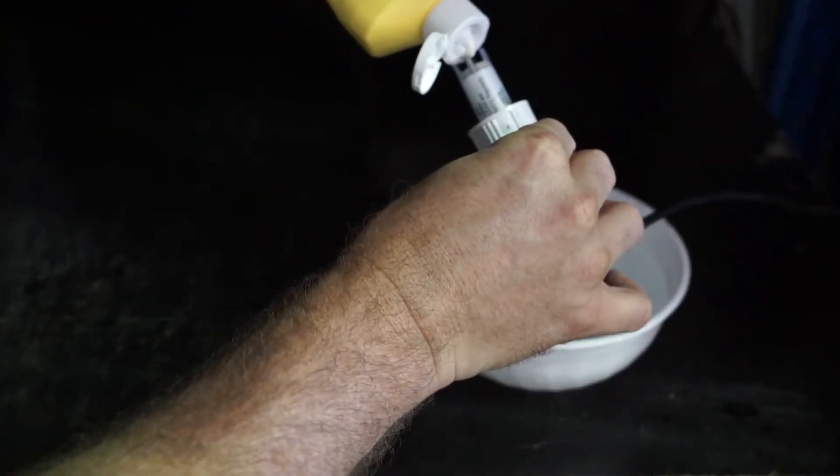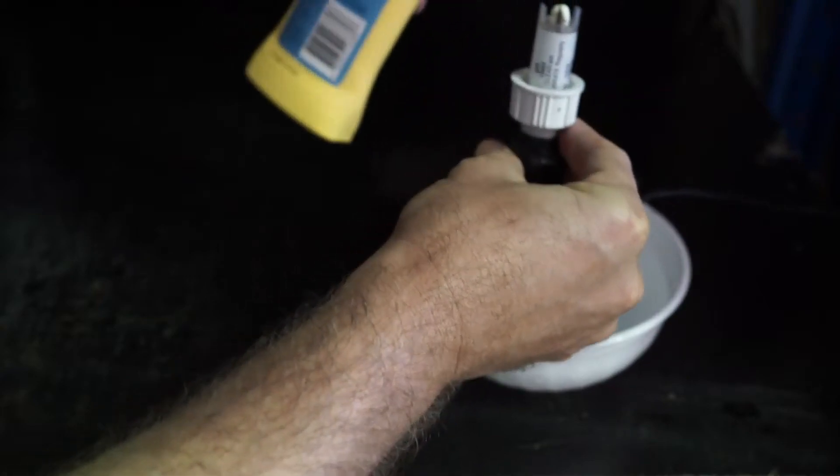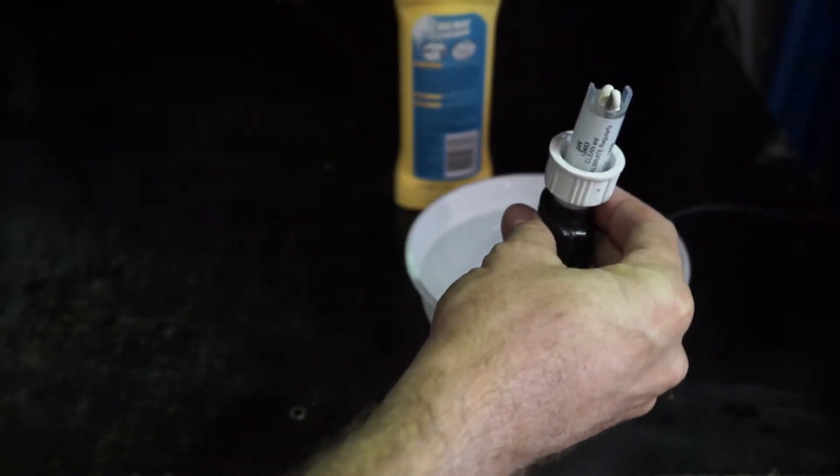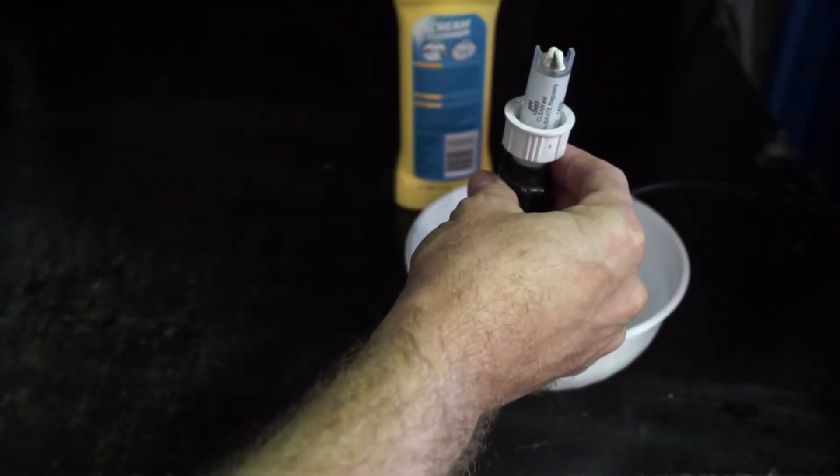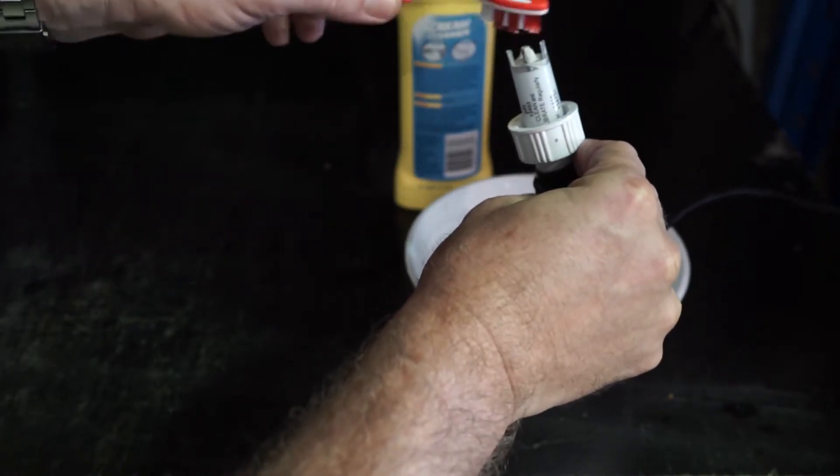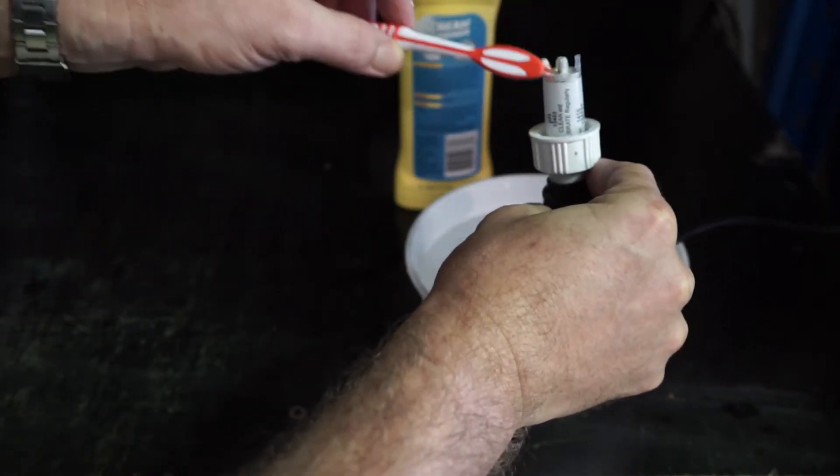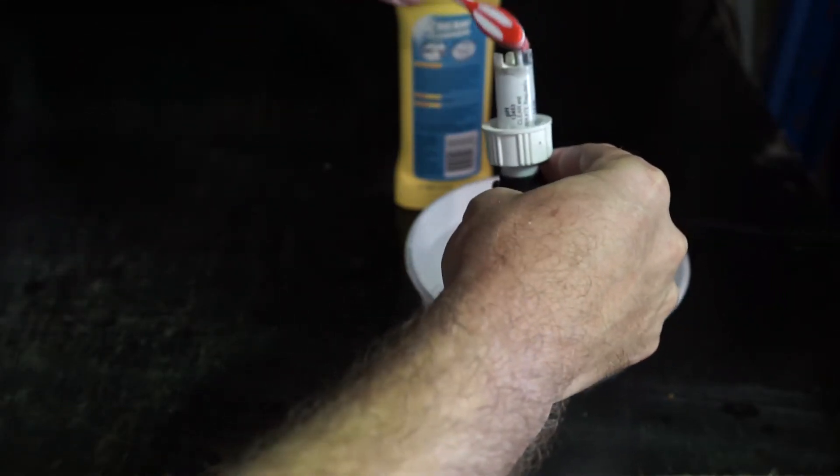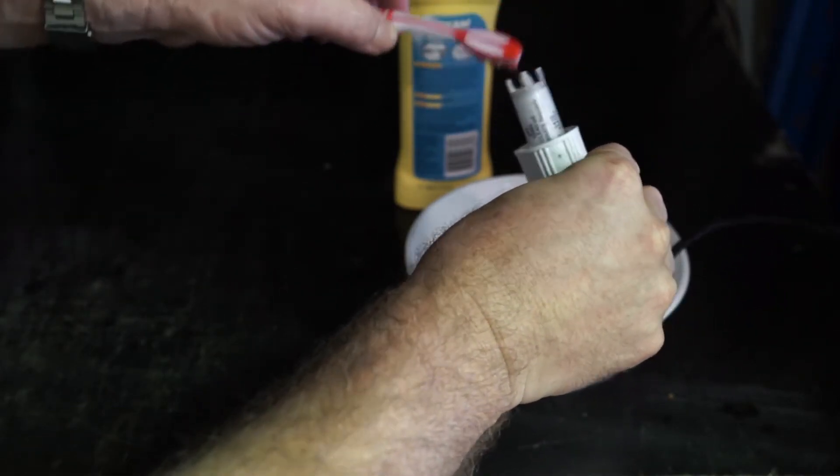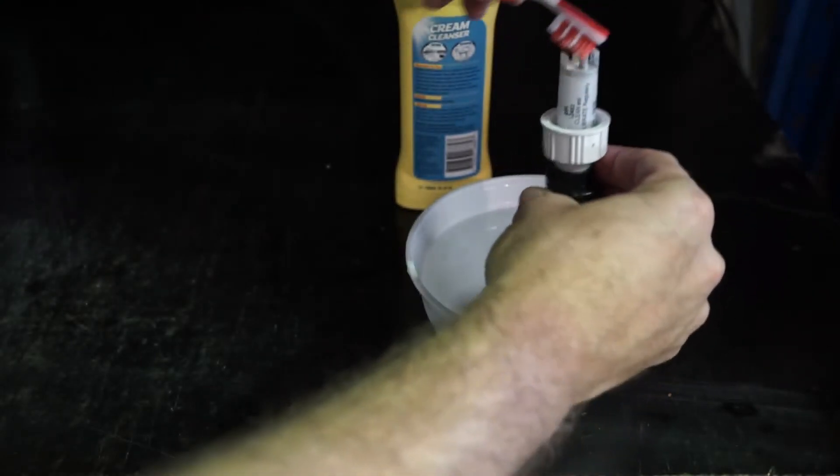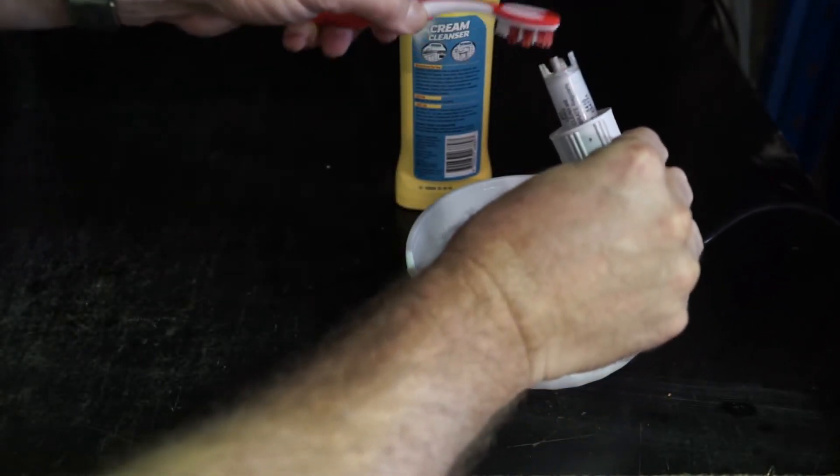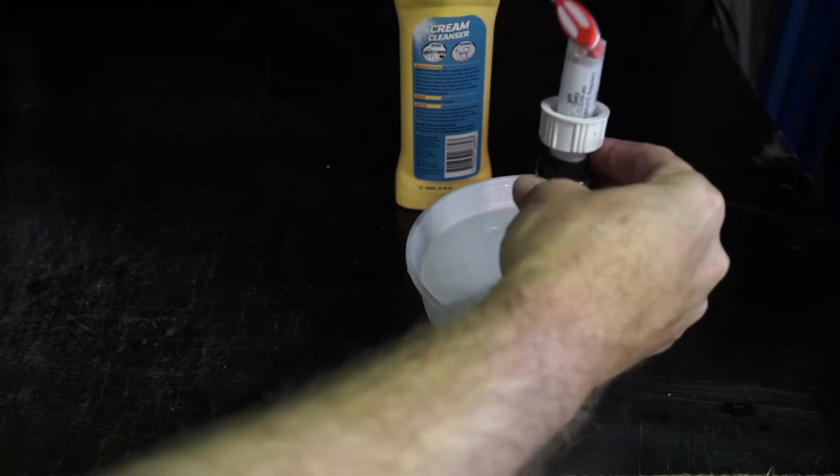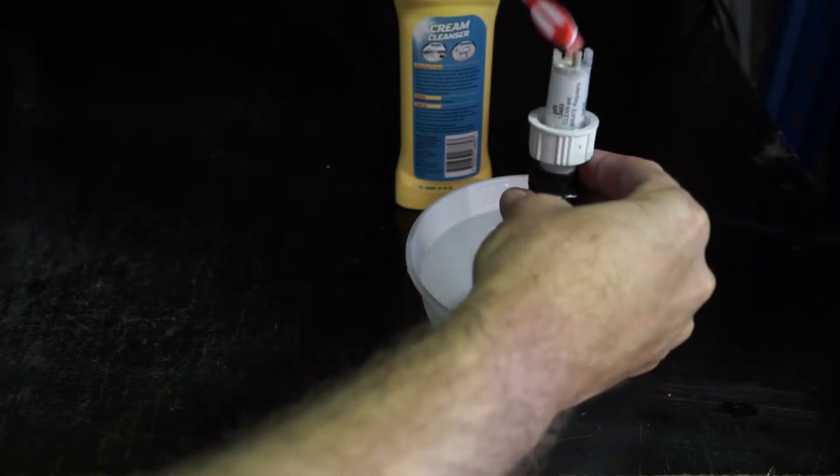Apply a small amount on the tip of the probe, and then with a soft toothbrush or cotton bud, gently scrub the top of the electrode, clearing away any built-up debris that's coated the probe tip.